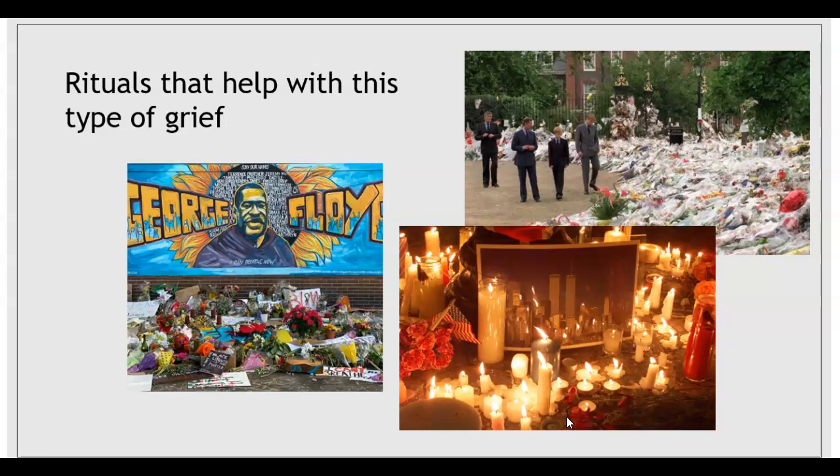After John Lennon was killed, candlelight vigils near his home in New York City allowed disenfranchised fans to participate in death rituals for a very famous man whose funeral was going to be very private. Candlelight vigils also helped people across America after September 11th, providing a way to express sorrow toward people they'd never met and feel connected to the victims' families. Similarly, dropping off flowers at Buckingham Palace after Princess Diana's death helped disenfranchised fans grieve alongside the family. Rituals, memorial services, and celebrations of life have proven very helpful for disenfranchised grievers.